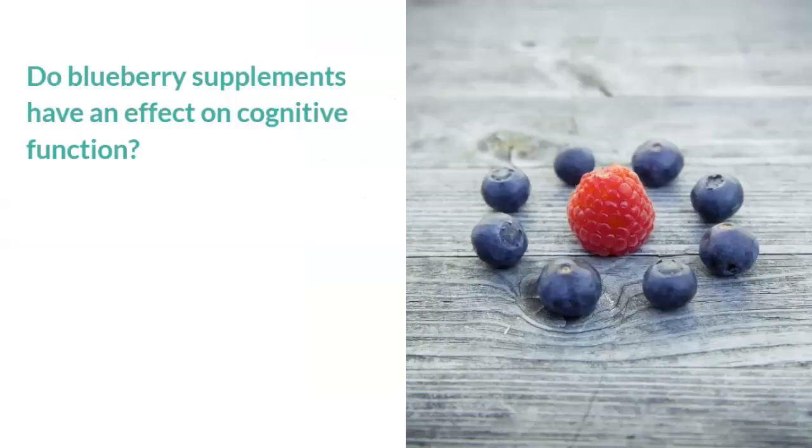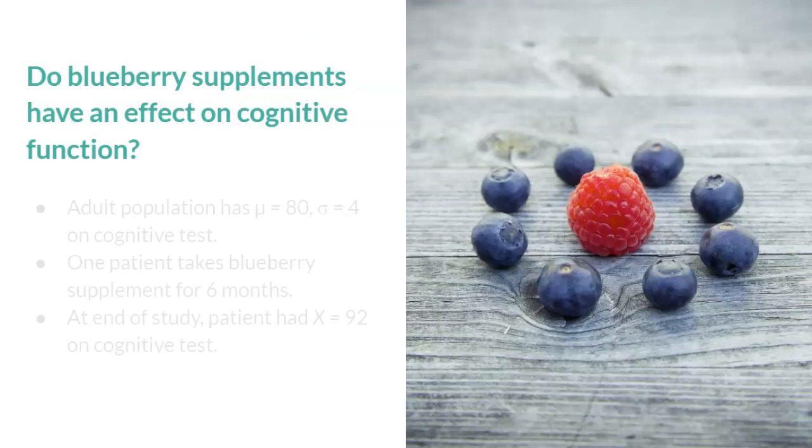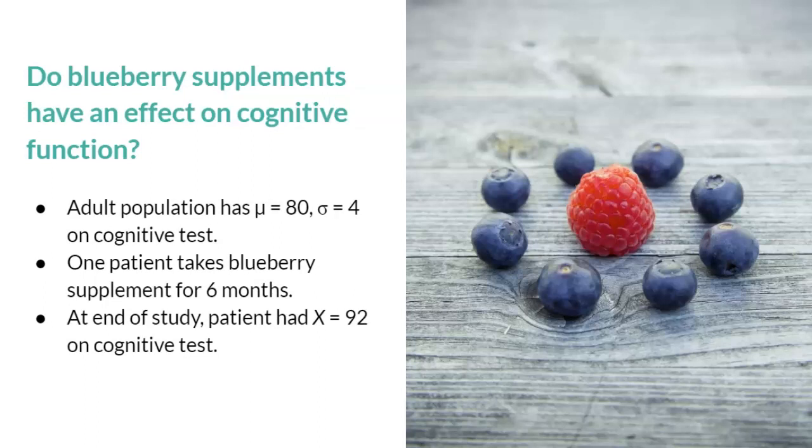The lecture example wants to know if blueberry supplements have an effect on cognitive function. The details of this research study are provided in your video handout. Basically, we know that the adult population scores on a cognitive test. Since we cannot study the entire adult population, we have one patient take a blueberry supplement for six months. And then we compare this one patient to the entire population to see if the supplements worked or not. I encourage you to pause the video here and try to do the four steps on your own first on the handout.